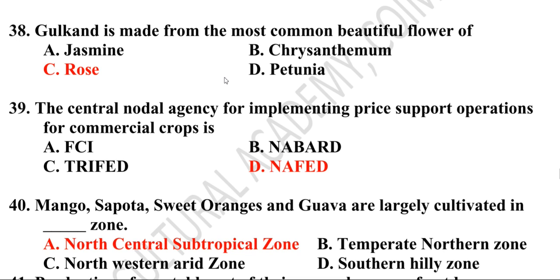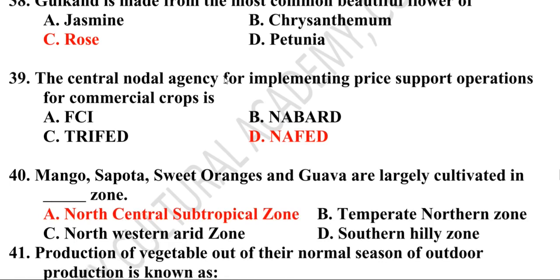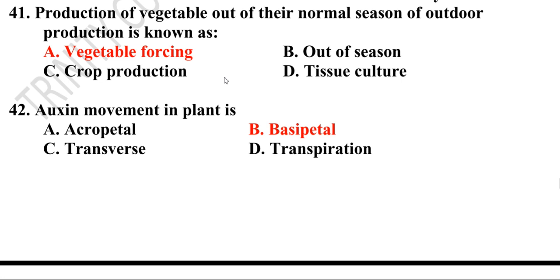Thirty-ninth question: Mango, sweet oranges, and Goa are largely cultivated in the north central subtropical zone. Fortieth question: Production of vegetables out of their normal season of outdoor production is known as vegetable forcing. Forty-first question: Oxen movement in plant is acropetal, basipetal, transverse, or transpiration? The correct answer is basipetal.